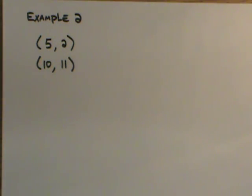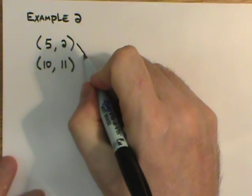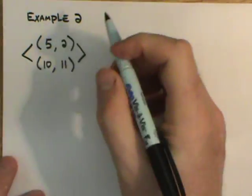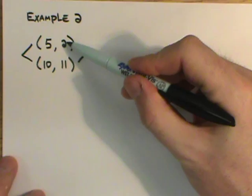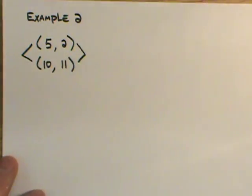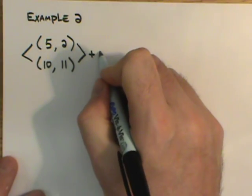Here we have example two for how to write a slope-intercept form equation. We want to first figure out what our slope is, so we're going to do our deltas. How do you go from 2 to 11? Hopefully you say add 9.